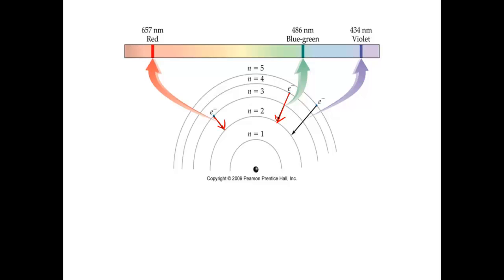A lot of students are confused by this because they ask, why aren't there any electrons dropping down to the first energy level? Well, this does occur. If an electron jumps from the second to the first level, this energy gap is much larger than the other energy gaps. So this energy would be too high and consequently would have a very small wavelength. Remember that wavelength and energy are inversely proportional to each other when it comes to light. So it would appear way over on the spectrum — it does appear, but it is out of the range that the human eye can detect.